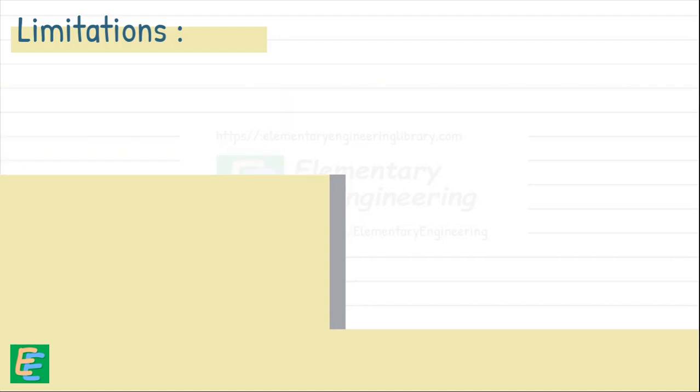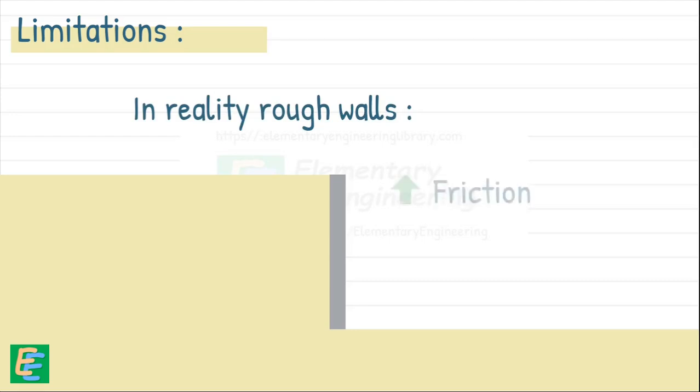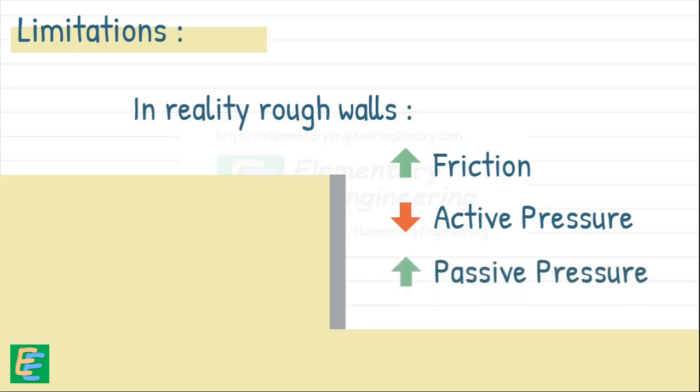The theory also assumes the surface of the walls as smooth, but in reality, walls aren't perfectly smooth. Rough walls increase friction, reducing active pressure and increasing passive pressure.